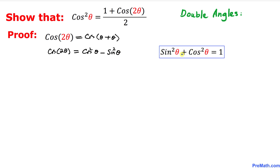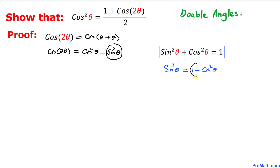Now let's recall our famous trigonometric identity: sine squared theta plus cosine squared theta equals one. We're going to move cosine squared theta to the right hand side, giving us sine squared theta equals one minus cosine squared theta.